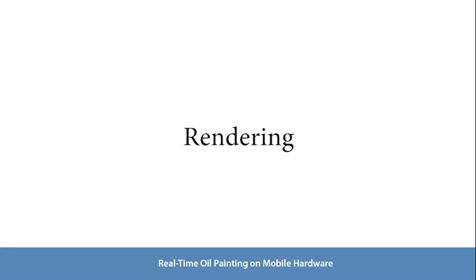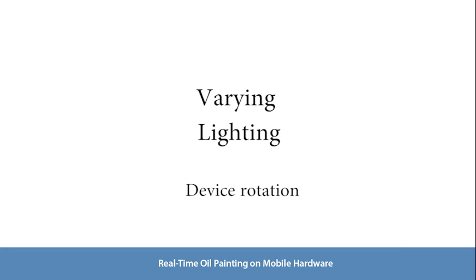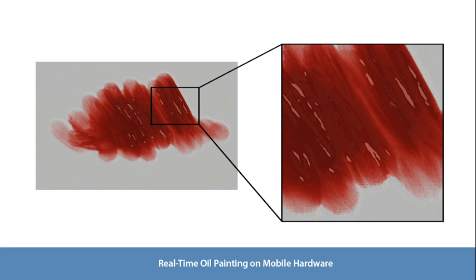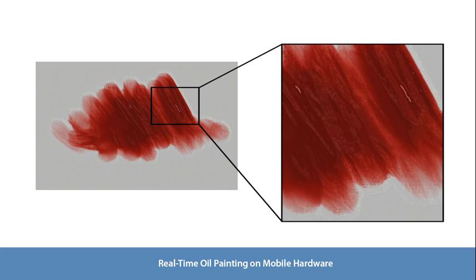Because we do full 2.5D simulation of the fluid, we are able to create realistic shading effects. The painting is lit by virtual lights, and by tilting the tablet the user can change the position of the virtual lights relative to the painting, exposing details on the paint surface.